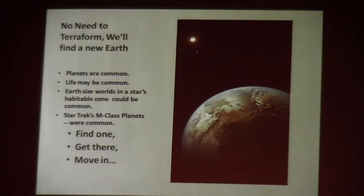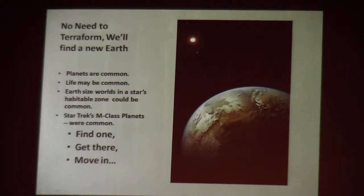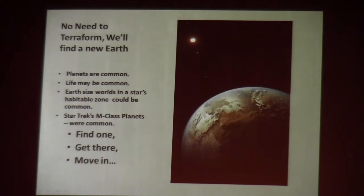The other objection is: we don't need to terraform — we'll just find a living world and move right in. We know planets are pretty common. We're detecting a lot of hot Jupiters, but that's because those are easy to detect. There's probably a lot of Earth-sized worlds out there too. Some people think life is pretty common — that's an open question. And as the definitive study on star travel, Star Trek — they couldn't go more than a parsec without stumbling over an M-class planet, so they must be very common. And they always spoke English — I never understood that.